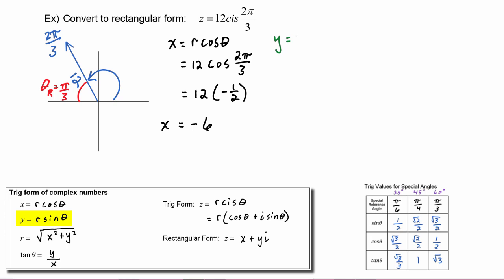y is equal to r sine of theta, so that's going to equal twelve times the sine of two pi over three. Our reference angle is pi over three; we go to the sine row and the value is radical three over two, and in quadrant two we know sine is positive. So our y value is going to be six radical three.